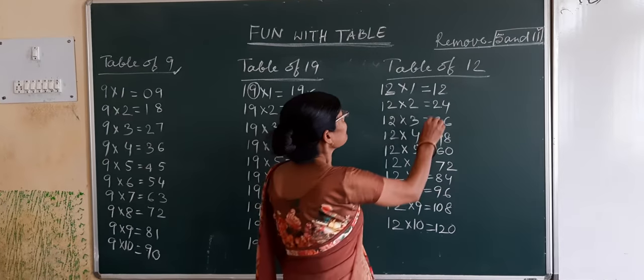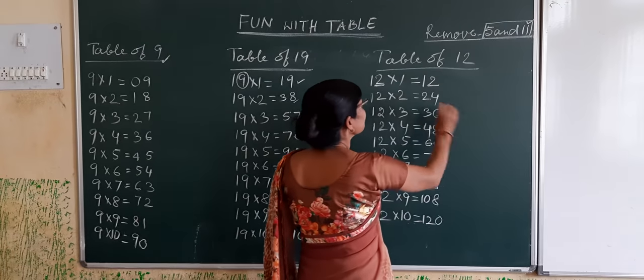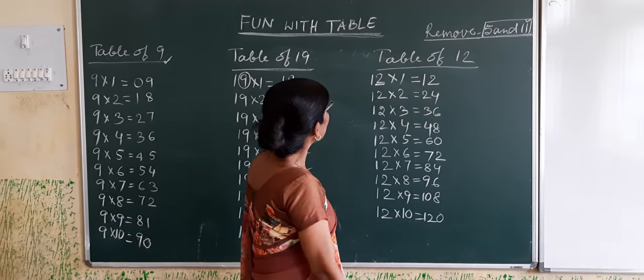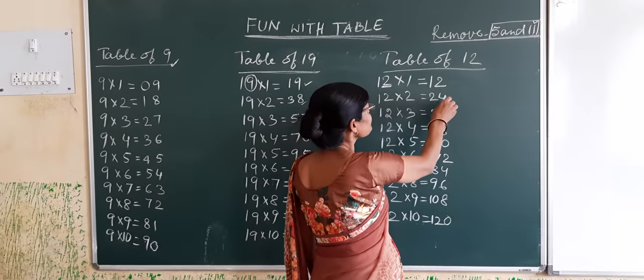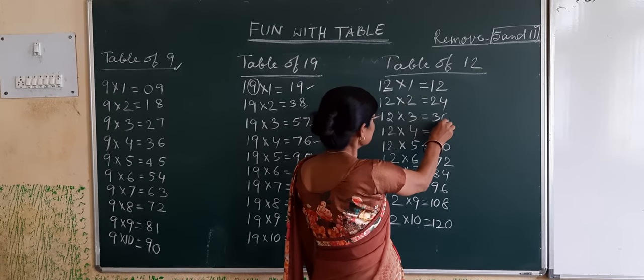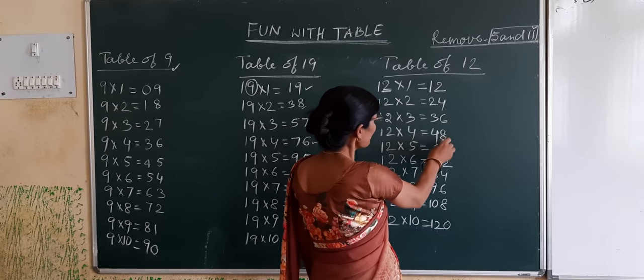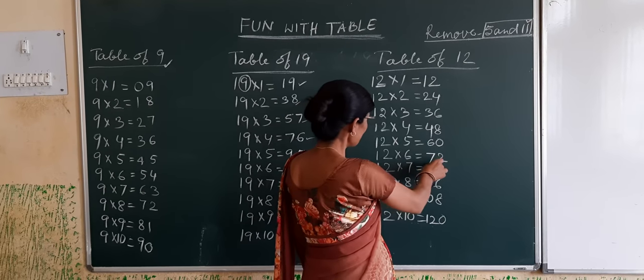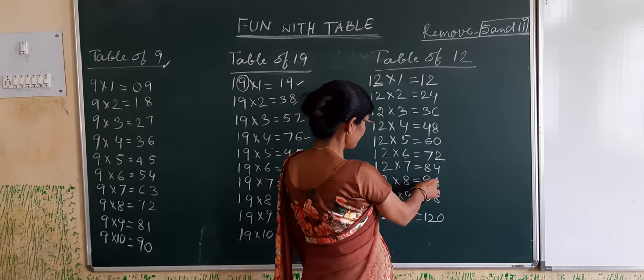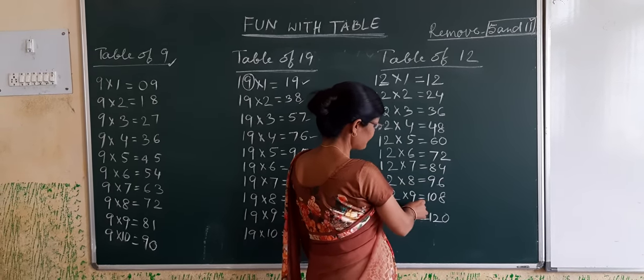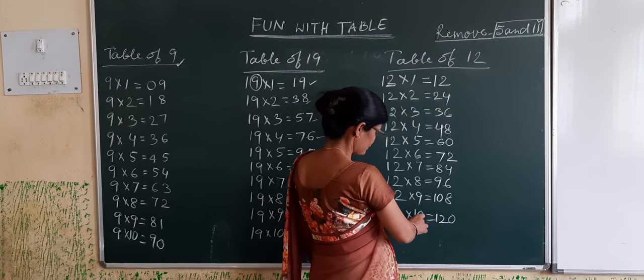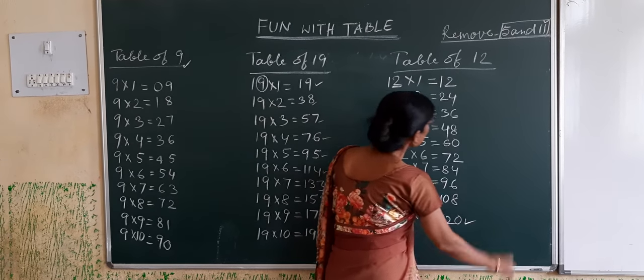Now see the table. Verify the table, is it right or wrong: 12 x 1 = 12, 12 x 2 = 24, 12 x 3 = 36, 12 x 4 = 48, 12 x 5 = 60, 12 x 6 = 72, 12 x 7 = 84, 12 x 8 = 96, 12 x 9 = 108, 12 x 10 = 120.